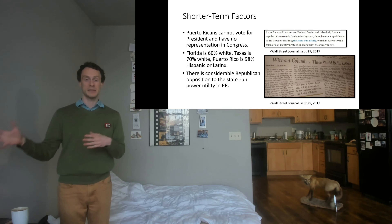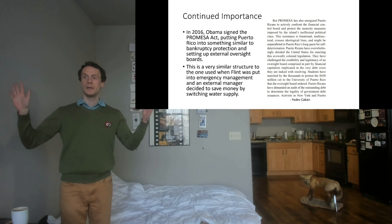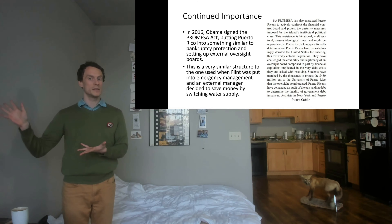There's also a lot of Republican opposition to the way that utilities are run in Puerto Rico — they're run by the state. It's also worth bearing in mind that Texas is 70 percent white while Puerto Rico is 98 percent Latinx according to the most recent data. One can make a compelling argument that those racial demographics played a very important role in determining whose lives were seen as mattering when it came to allocating federal aid.